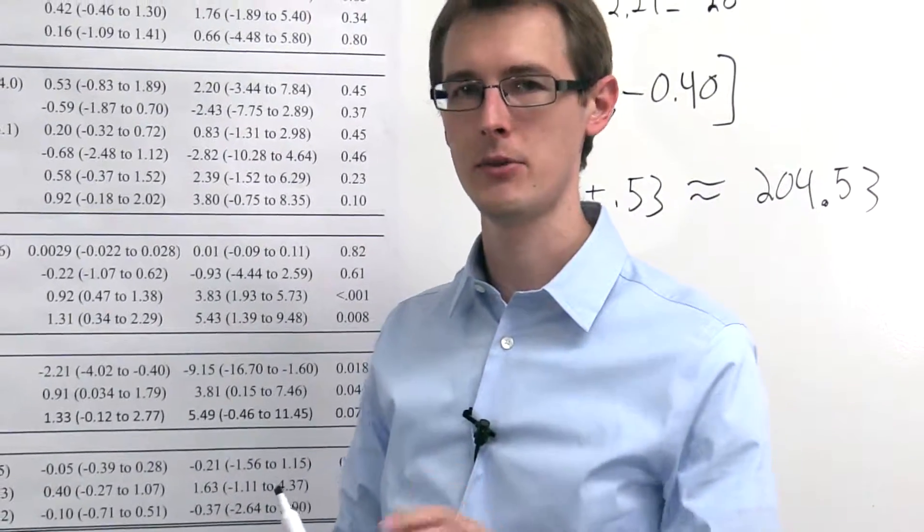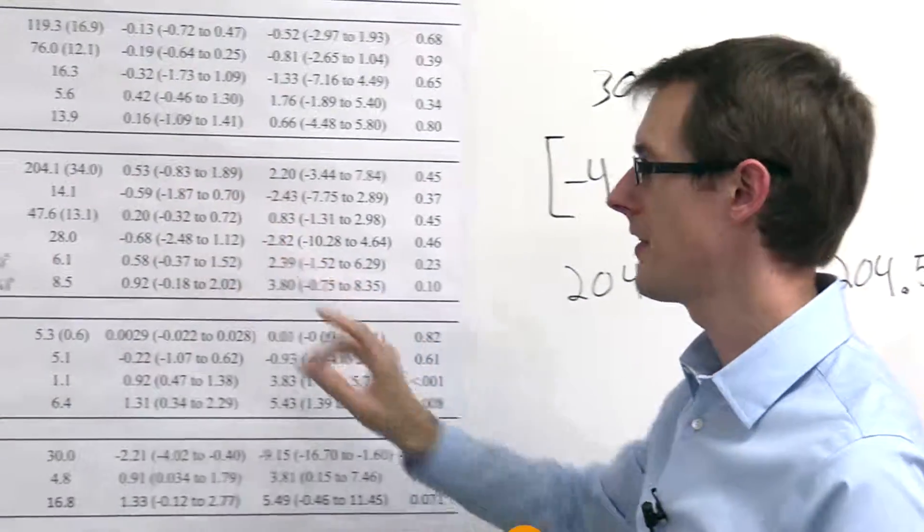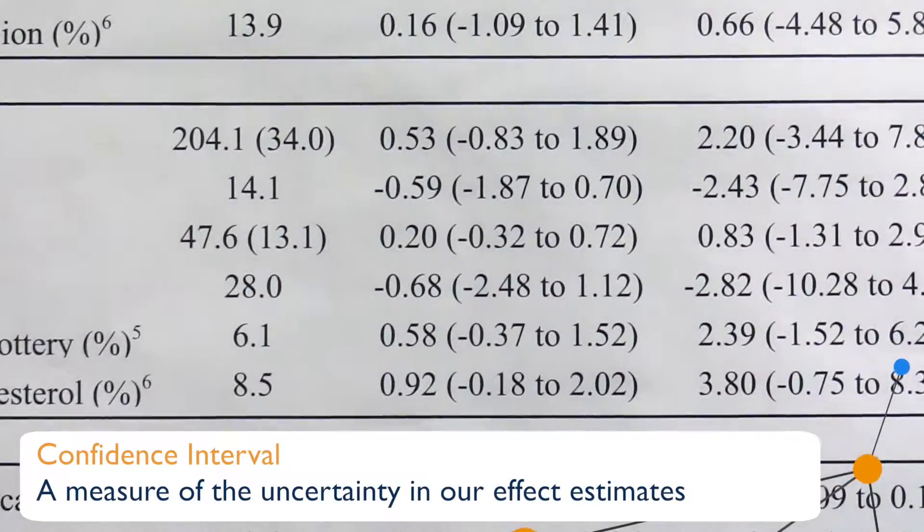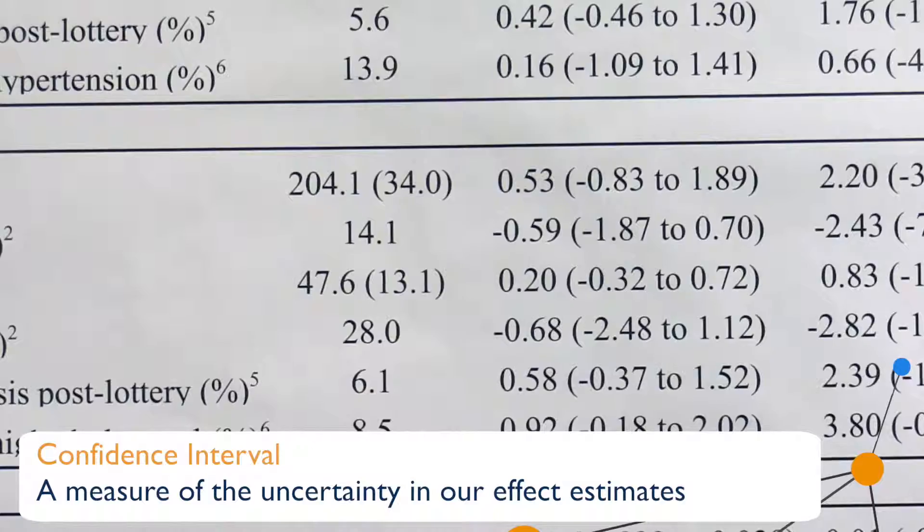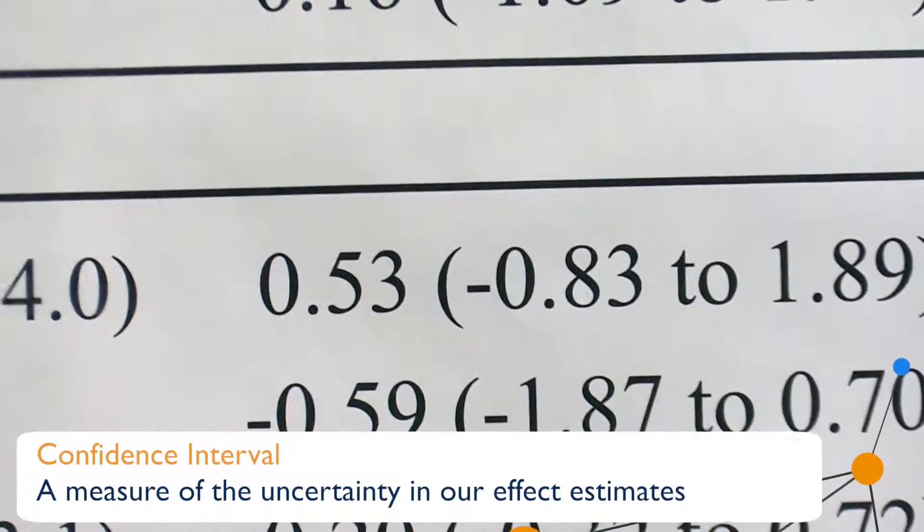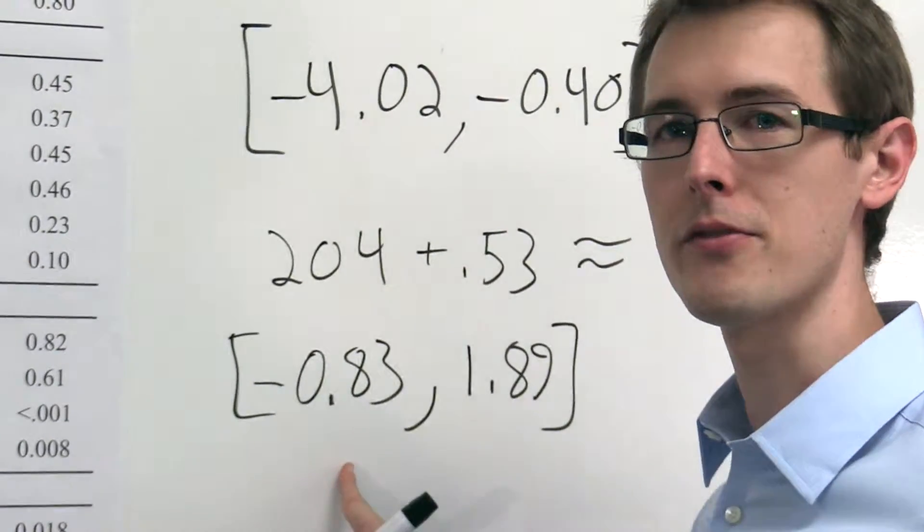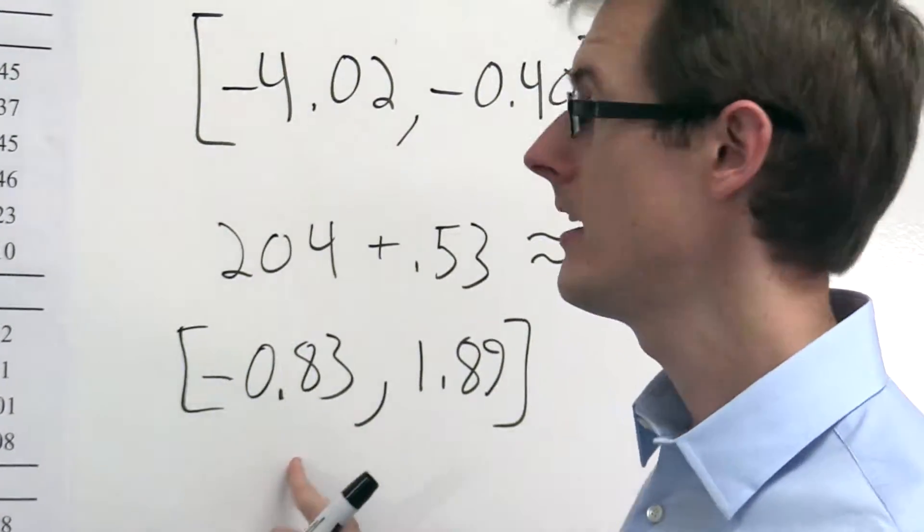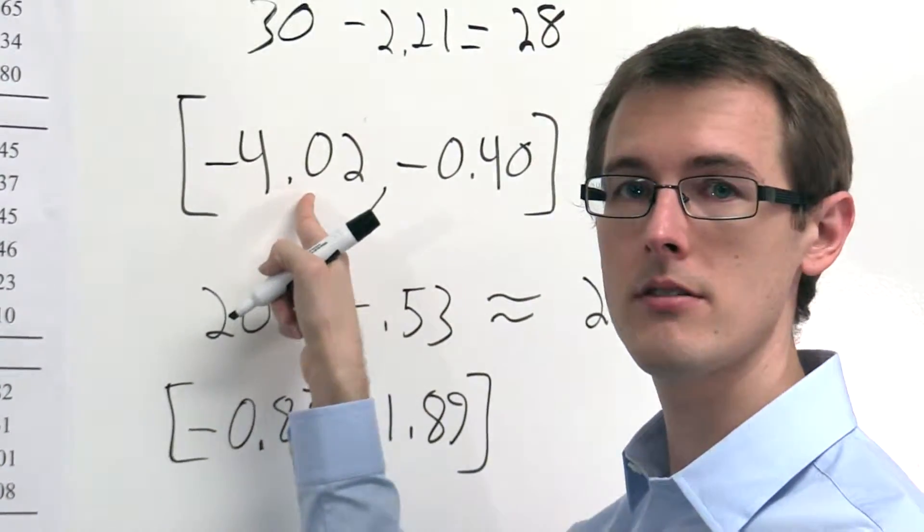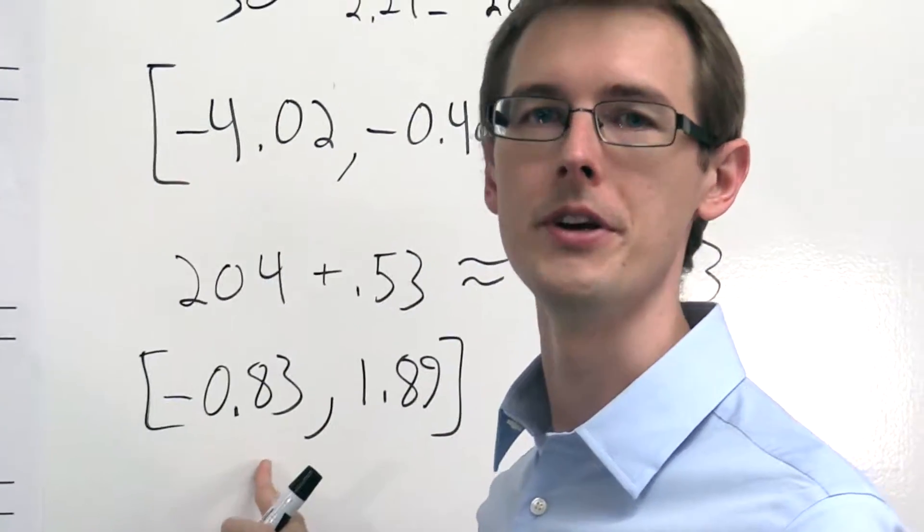So we have to actually worry about sample size in practice. So that's what the confidence interval is going to give us. So here, the confidence interval is minus 0.83 to 1.89. So first question we ask, is 0 in the interval? Yes. So unlike before with depression, where 0 wasn't in the interval, here 0 is in the interval.